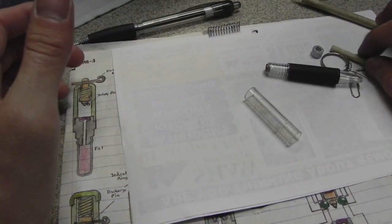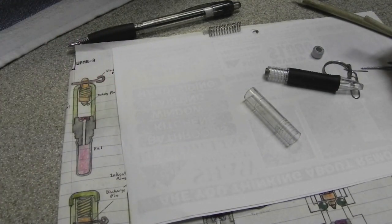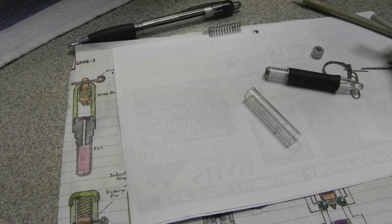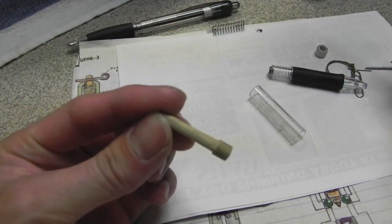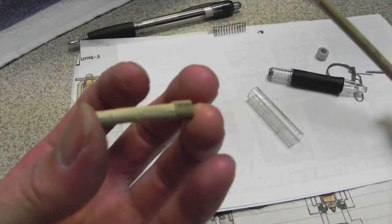And for the firing pin, there's numerous ways of making it. You can use a paper clip, wrap paper around it, and super glue it. Or, for simplicity's sake, I'm just using a wooden dowel that's been carved out.